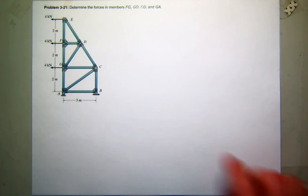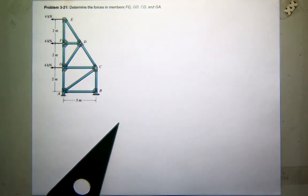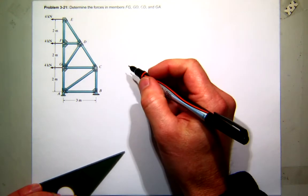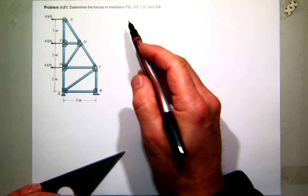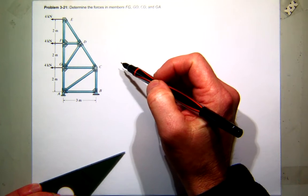Alright, so let's work on this problem. This is 3-21 out of your book. Now, this kind of fits nicely with the method of sections that we talked about last time. I know it's been a while. We stopped to do the connects work, but there's only a handful of members identified.